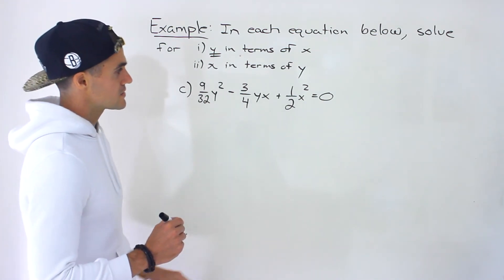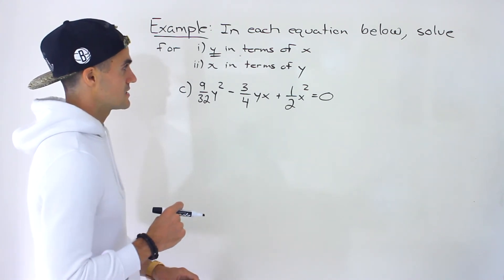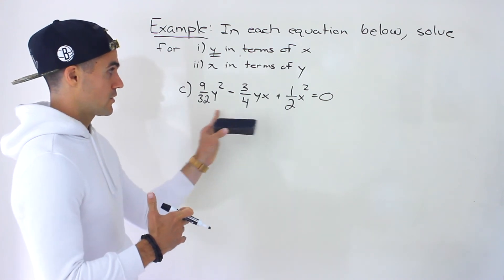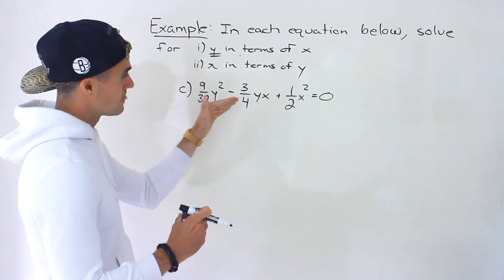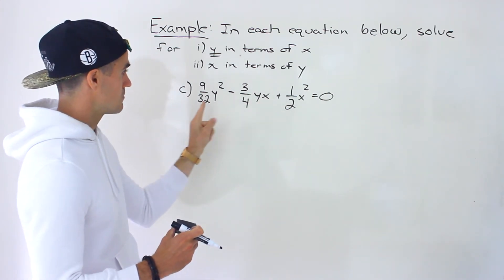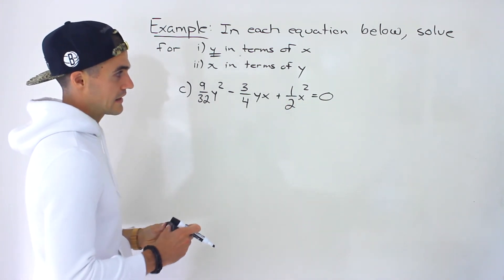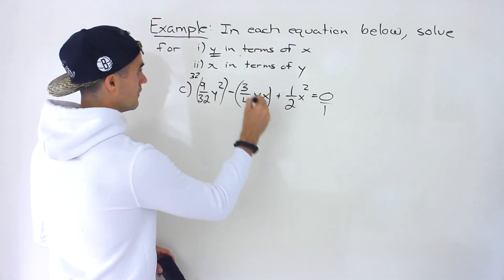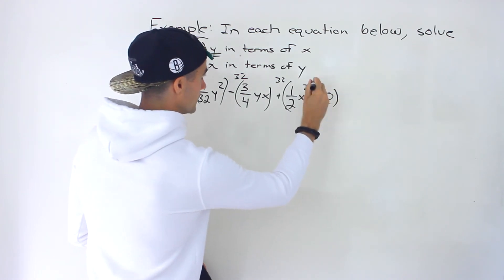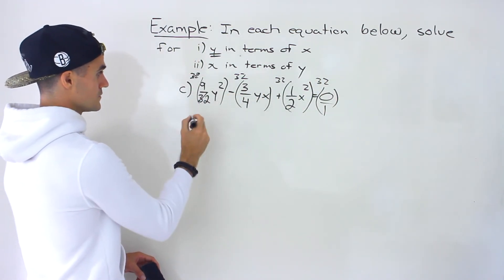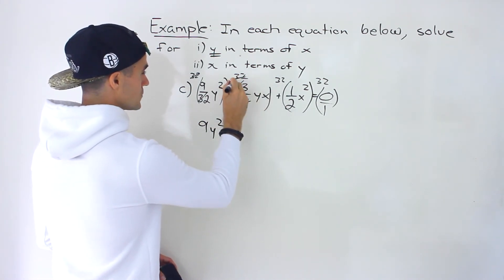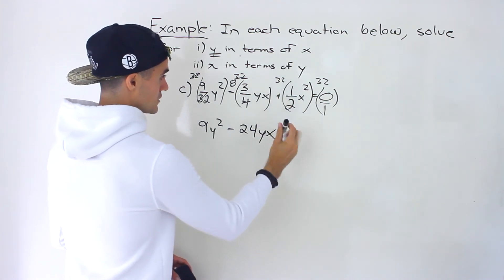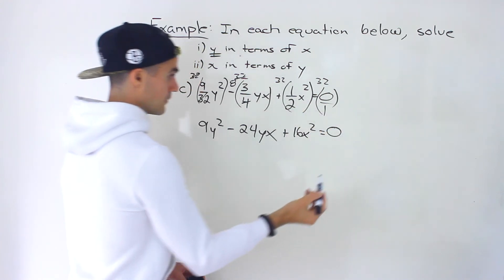For part c, we have 9 over 32 times y squared minus 3 over 4 times yx plus 1 over 2 times x squared equals 0. This looks more intimidating because of the fractions. What I like to do is multiply everything by the lowest common denominator to get rid of the fractions. Between 32, 4, and 2, the lowest common denominator is 32. Multiplying everything by 32: the 32s cancel giving 9y squared; 4 goes into 32 eight times, so negative 8 times 3 gives negative 24yx; and 1 half times 32 gives 16x squared. So we get 9y squared minus 24yx plus 16x squared equals 0.